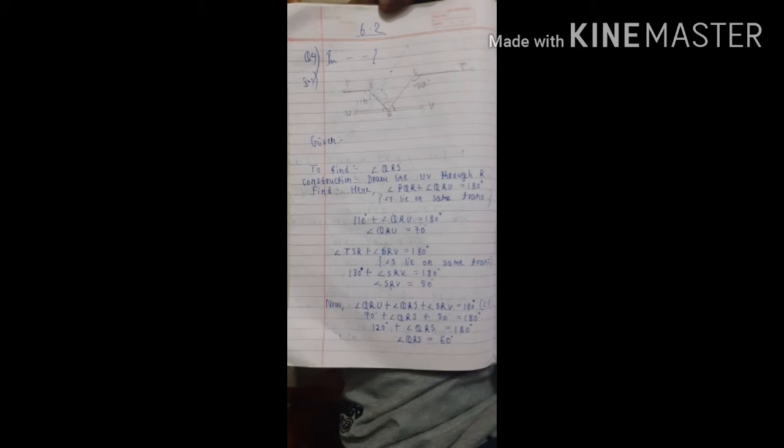Construction refers to changes we make ourselves in the diagram to solve the question. We drew UV through R. Now if you look at the diagram carefully, the first step is: angle PQR plus angle QRU is equal to 180 degree. The reason is angles lie on the same transversal — this property is used when two angles lie on the same line and shift to the left or right, their sum being 180 degree. Angle PQR was 110 degree, so angle QRU comes out to 70 degree (180 minus 110).